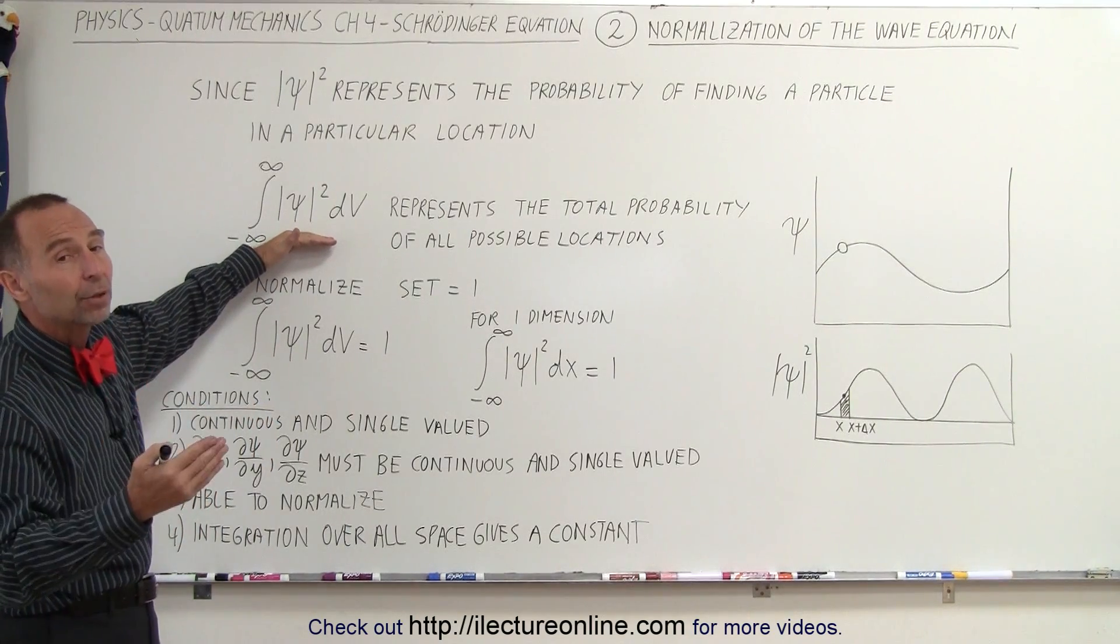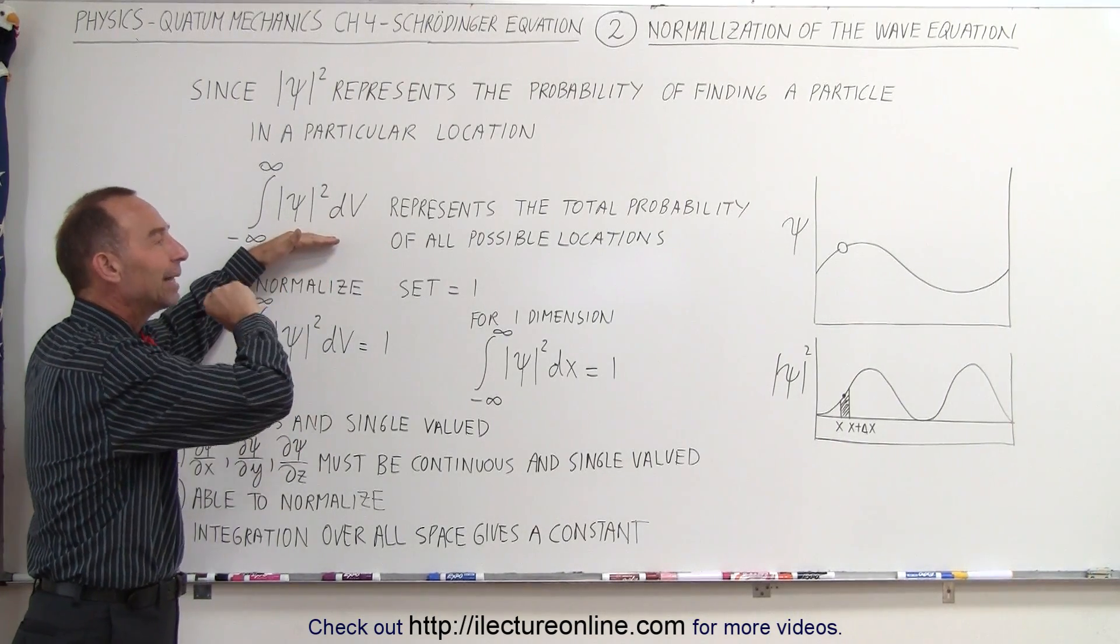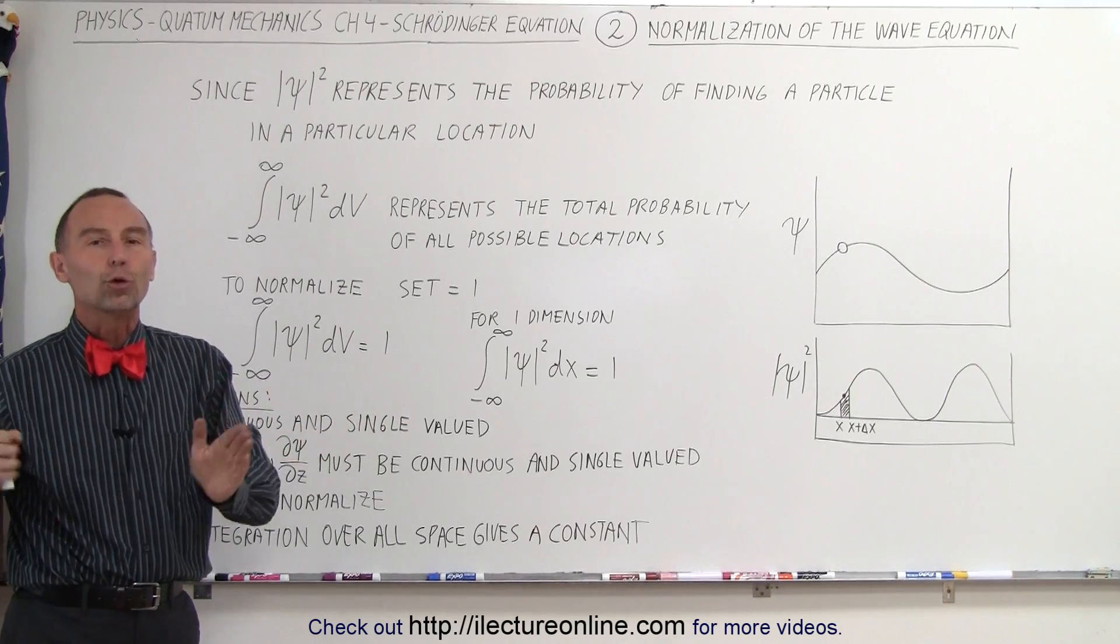The number that you typically end up with will be greater than one, so what we do is divide that result by itself to make it equal to one, which is called normalization.